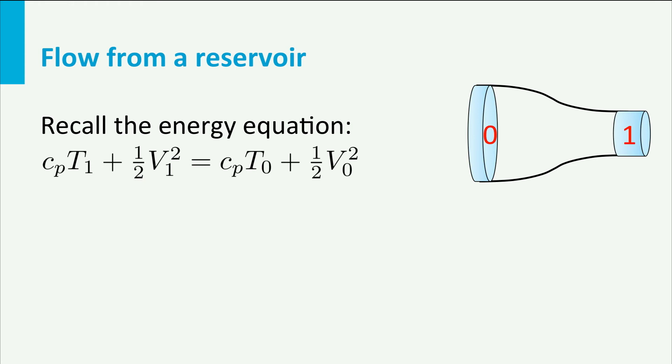Let's look at the energy equation for this flow. So CPT1 plus 1 half V1 squared is CPT0 plus 1 half V0 squared. Now in the reservoir the velocity is zero, so the V0 disappears. Which leaves us with CPT1 plus 1 half V1 squared is CPT0. Or, if we write it differently, T0 over T1 is 1 plus V1 squared divided by 2 CPT1. Now we would like to relate these temperatures to the Mach number. So we have to rewrite this.